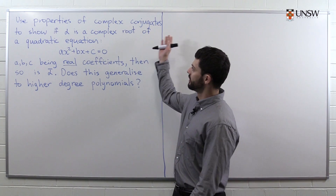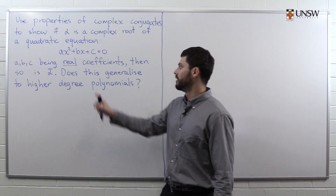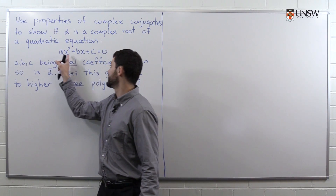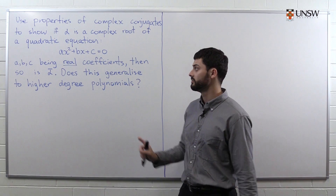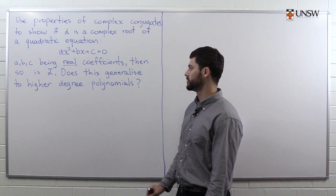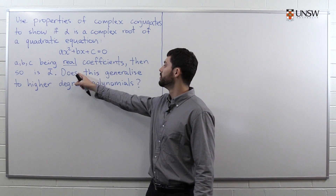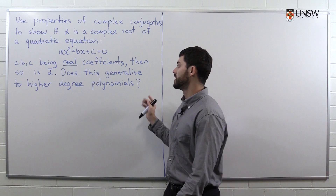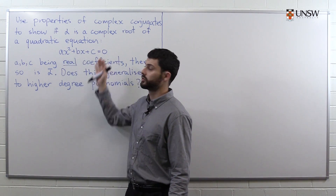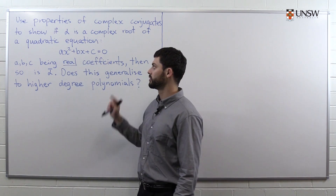We're asked to use properties of complex conjugates to show that if alpha is a complex root of this quadratic equation with the coefficients a, b, and c being real — and that's going to be very important later — we're asked to show that the conjugate of alpha is also a root. Then there's a follow-up question: whether this generalizes to higher degree polynomials. Is there something special about this being a quadratic equation? Would it work if there was a 3 here, for example? We'll talk about that later.